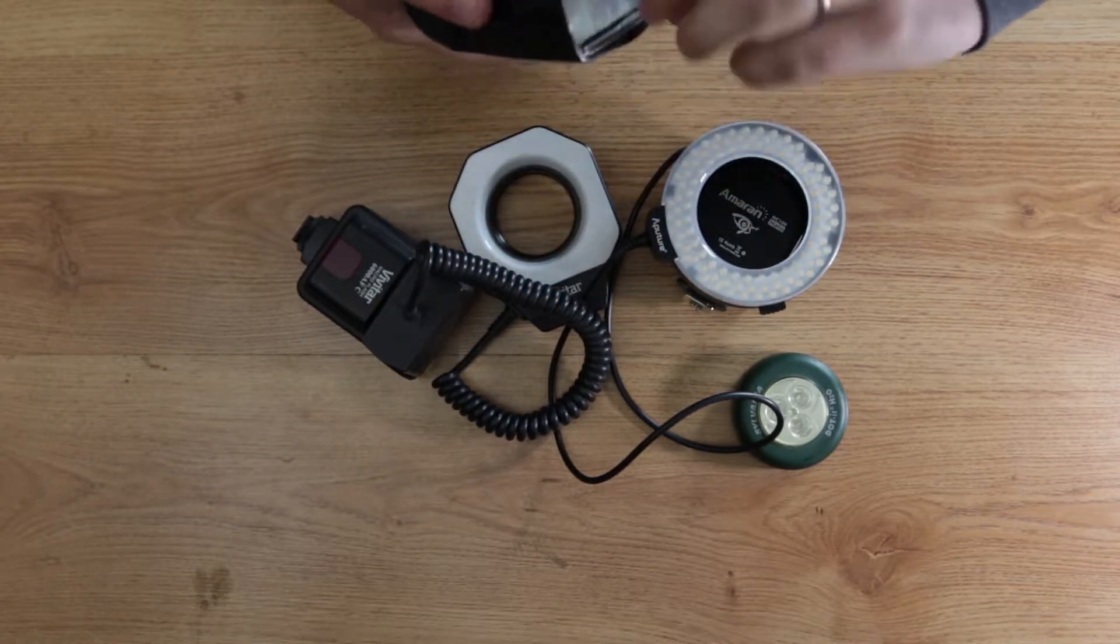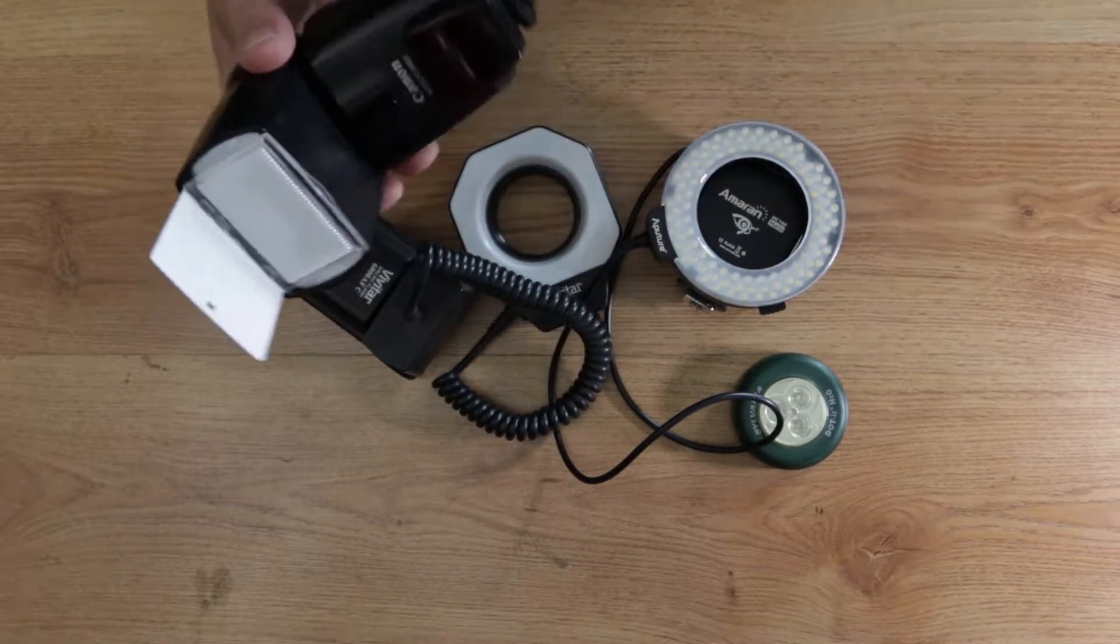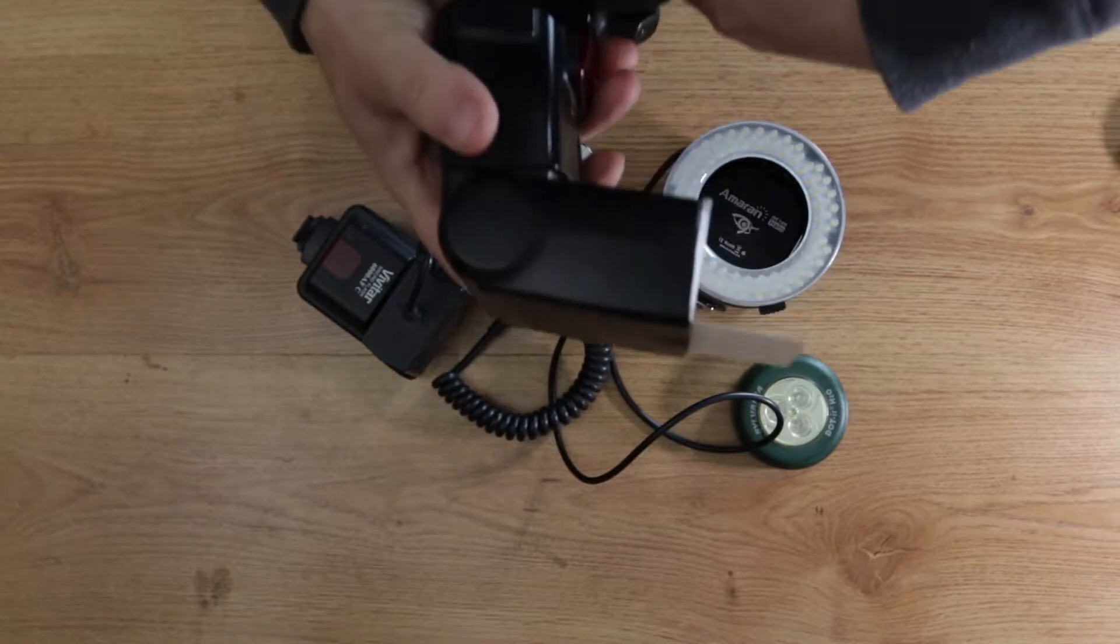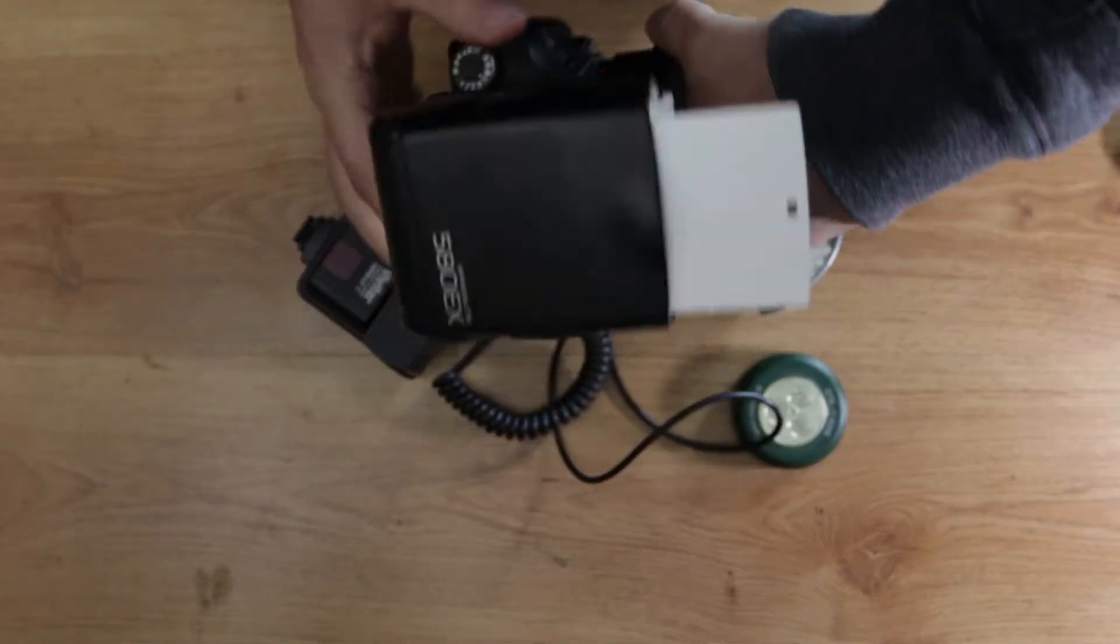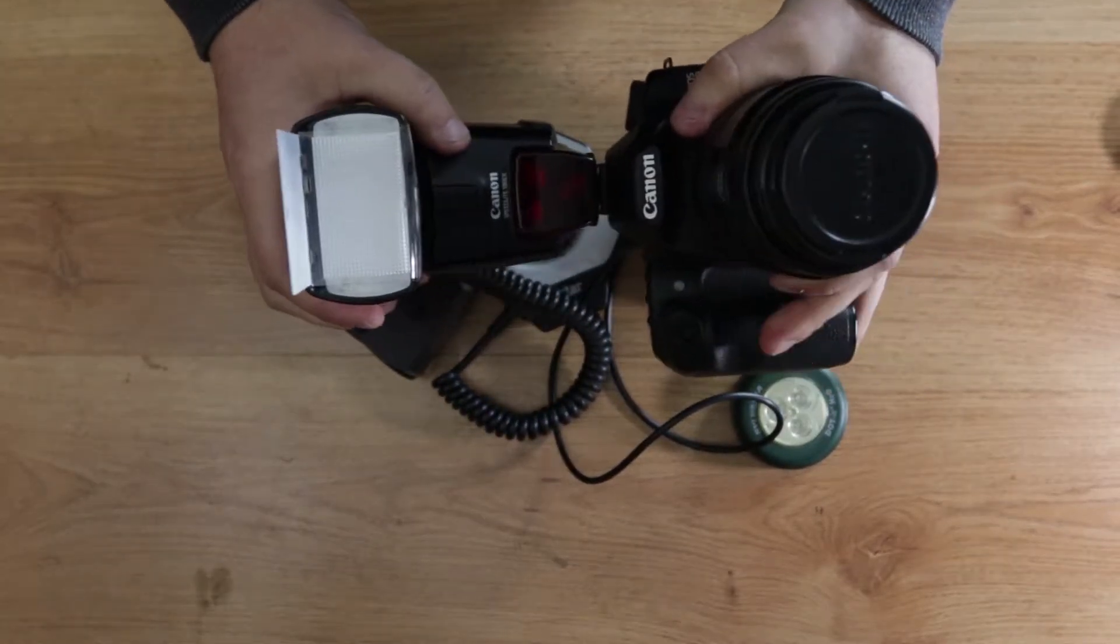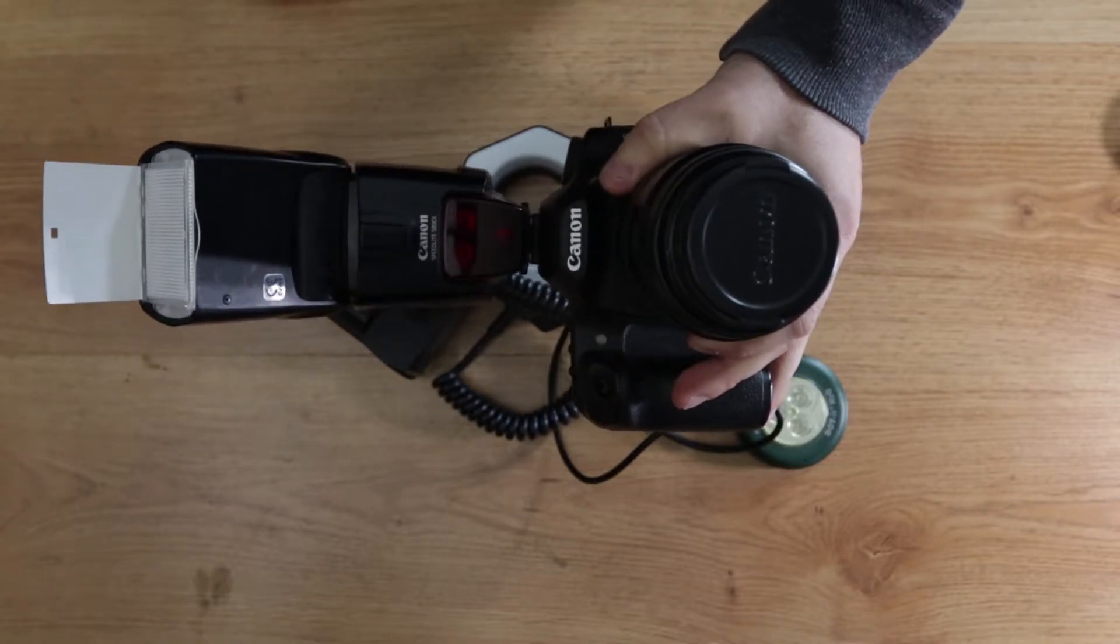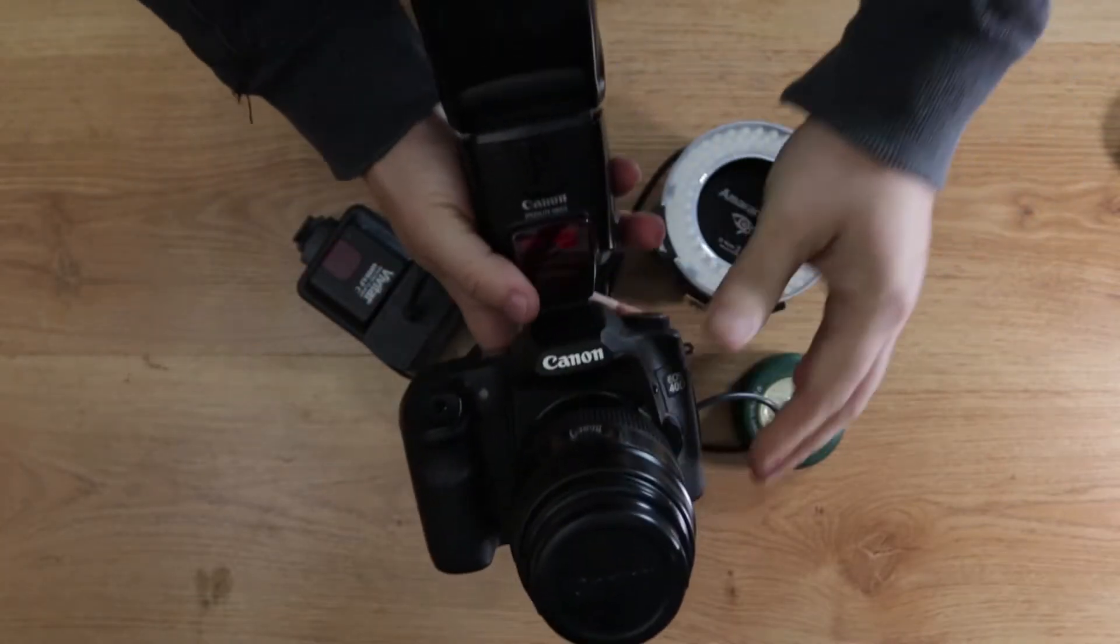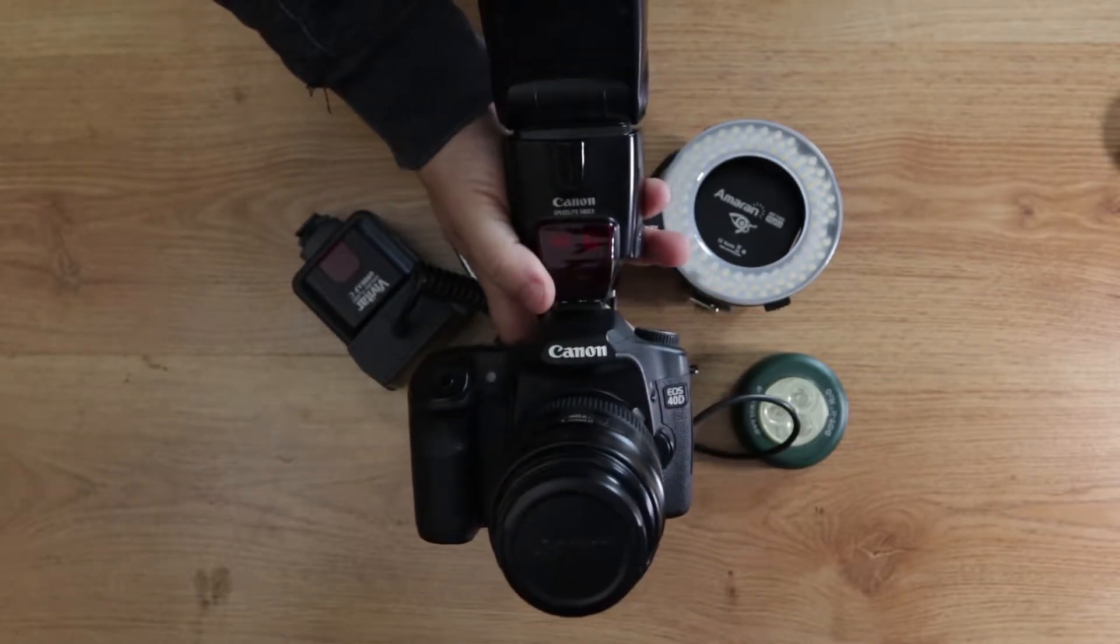You can use the bounce cards in them if your subject is far enough away. So you'd be able to mount this on your camera, and if you're shooting straight at the lens here, you tilt it up like that and just diffuse the light a little bit more.